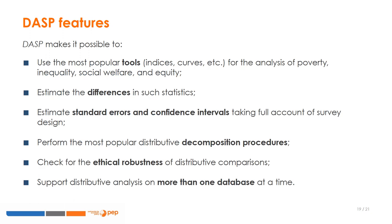DASP makes it possible to use the most popular statistical tools for the analysis of poverty, inequality, social welfare, and equity; to estimate the statistical differences in such statistics; to estimate standard errors and confidence intervals that take full account of the survey design; to apply the most popular distributive decomposition procedures; to check for the ethical robustness of distributive comparisons; and to support distributive analysis using more than one database at a time.